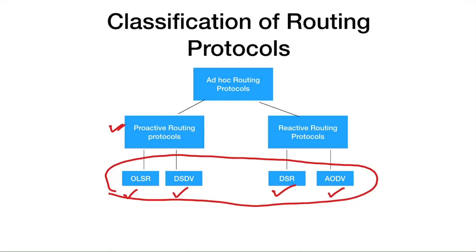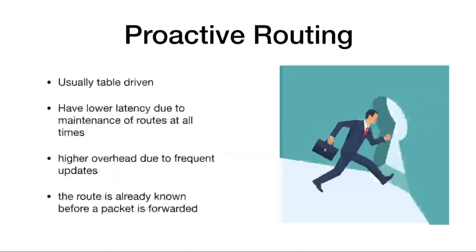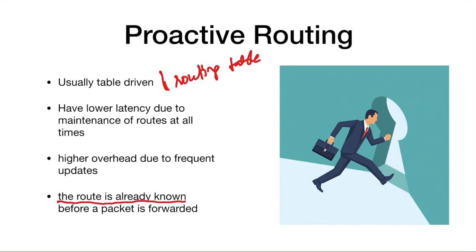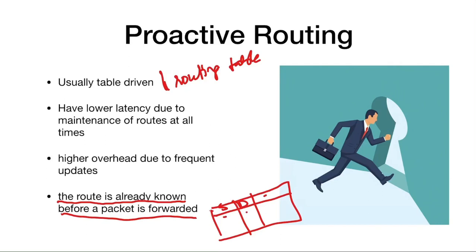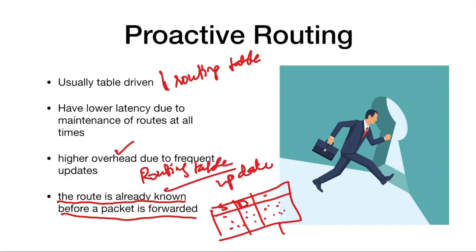Proactive routing is table-driven — based on the routing table, packets are routed. The route is already known before a packet is forwarded because the routing table is pre-computed using various parameters. Whenever a node fails or runs out of energy, the routing table is recomputed, causing higher overhead. However, since routes are maintained at all times, proactive routing has lower latency.